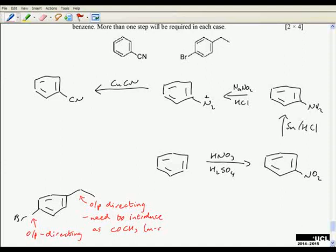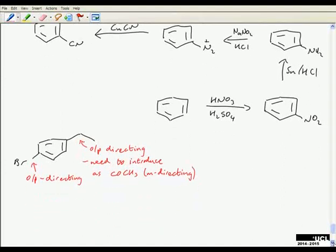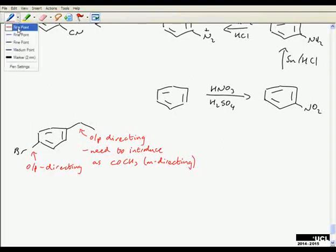So we need to introduce this as COCH3, and that's going to be meta-directing, and that gives us some idea of what order we're going to do the steps in. We're going to introduce the ketone group probably to the bromo benzene, but there's more than one answer here that will be acceptable. So here's our starting material, benzene.